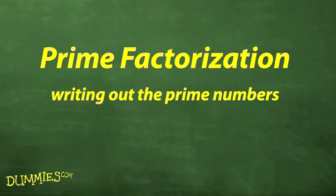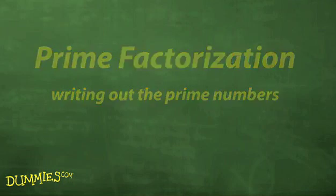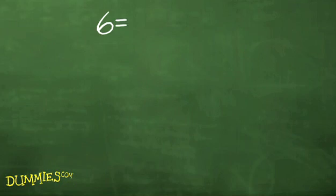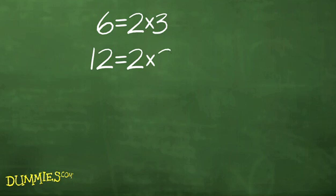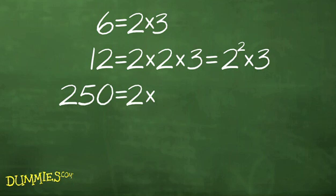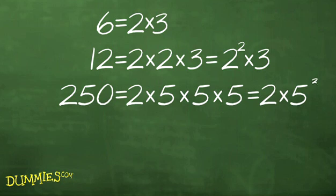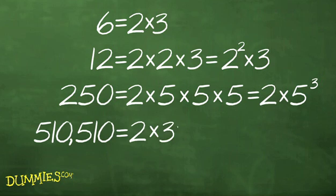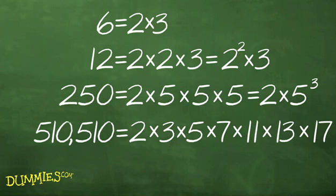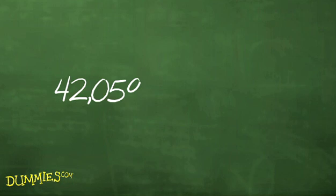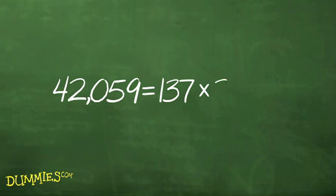Every number's prime factorization is unique. Here are some examples: 6 = 2×3, 12 = 2×2×3 or 2²×3, 250 = 2×5×5×5 or 2×5³, 510,510 = 2×3×5×7×11×13×17, and 42,059 = 137×307.